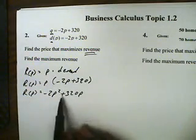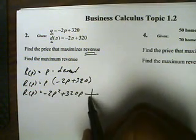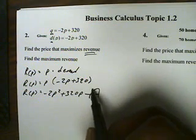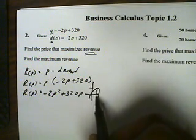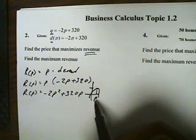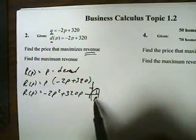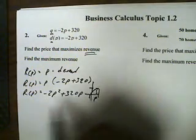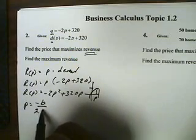This revenue function is a quadratic with a negative leading coefficient, which means that the graph of this will be concave down and will have a max. The max will occur at the price P. The formula that will find this for us is the axis of symmetry formula, which is the opposite of B divided by 2 times A.